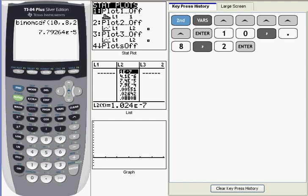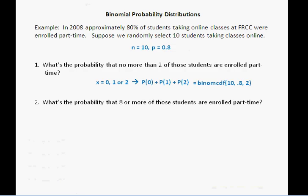Let's do another example. Here's another question: What's the probability that 8 or more of the 10 students are enrolled part-time? Now, the actual calculation part of this question is easier to do than trying to understand the reasoning behind it, but I'm going to try to explain it here. 8 or more translates into x values of 8, 9, or 10. And so the quantity we're looking to find is the sum of these three individual probabilities: p of 8, p of 9, and p of 10.